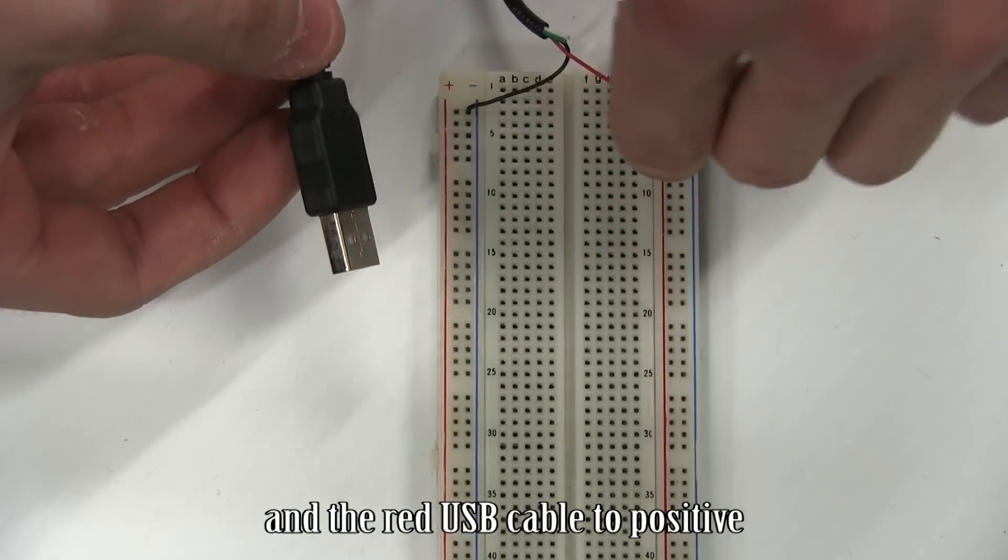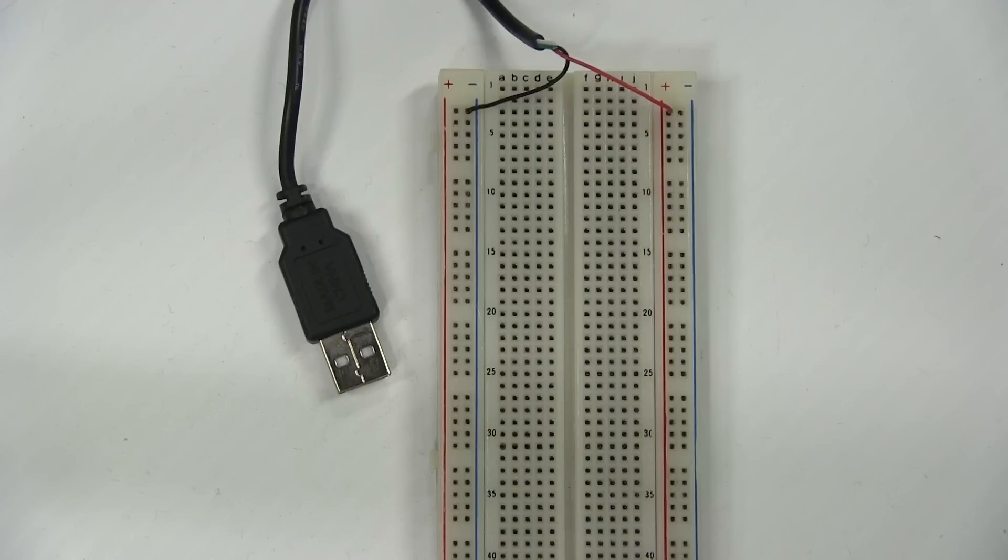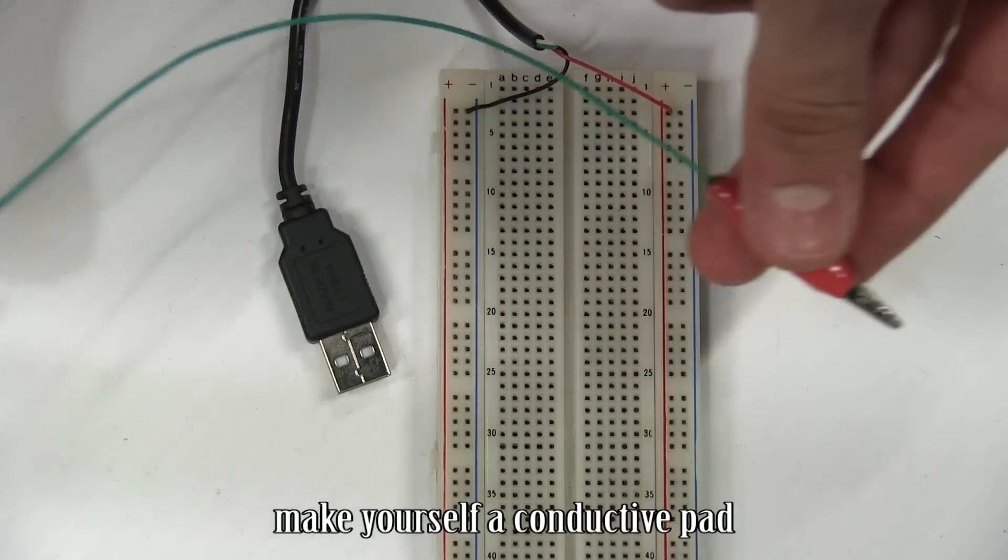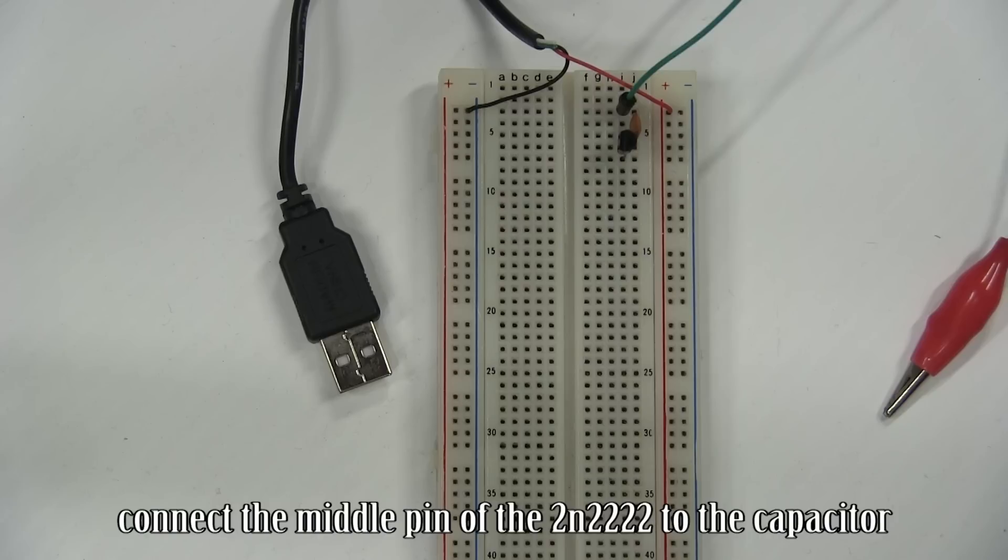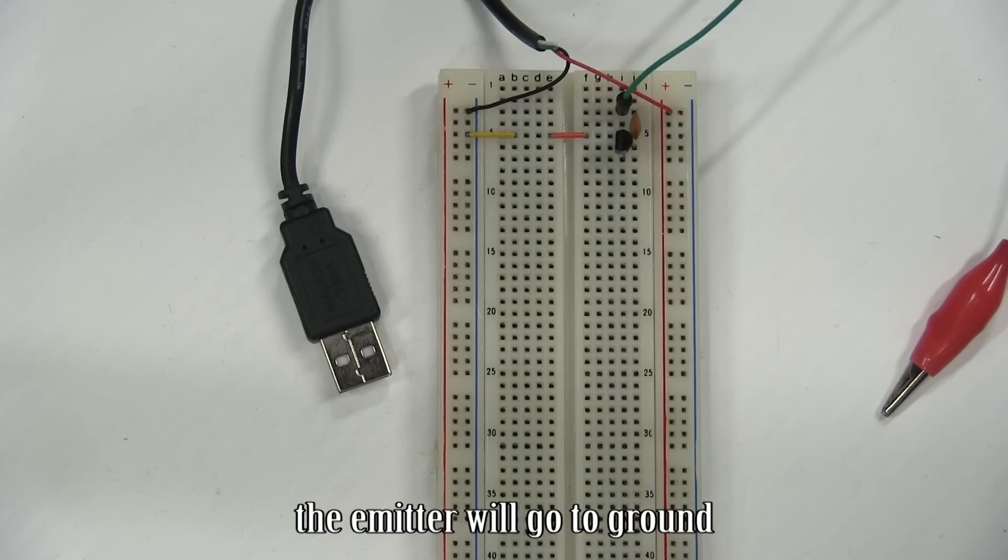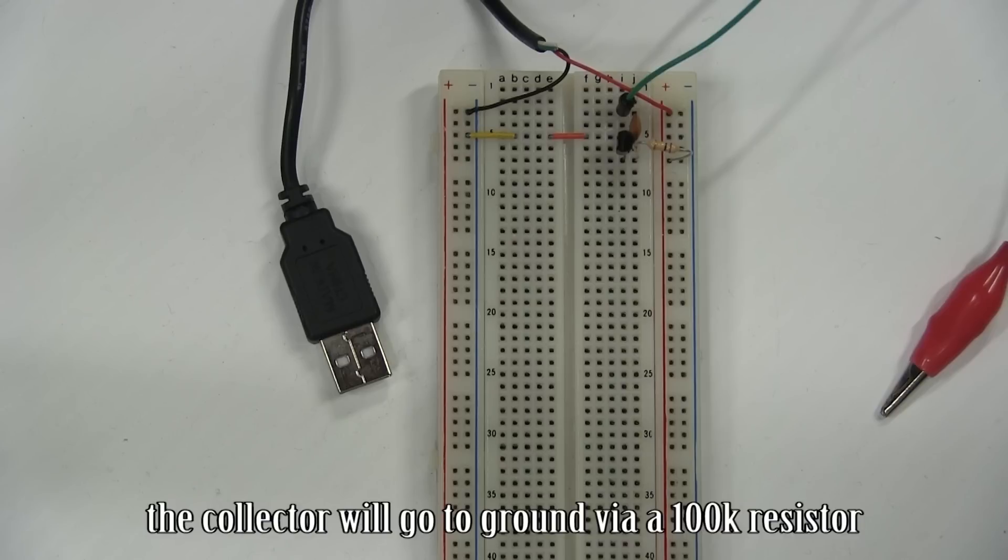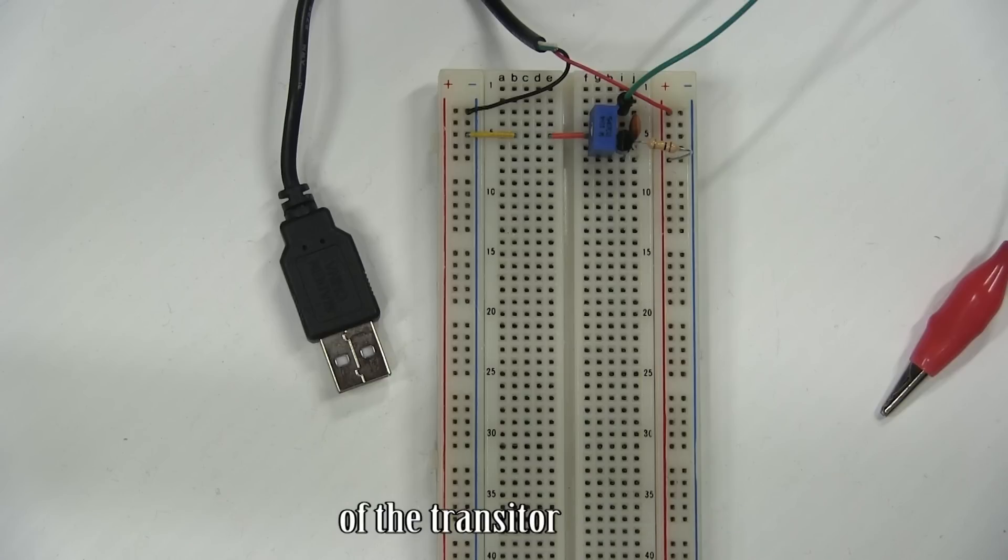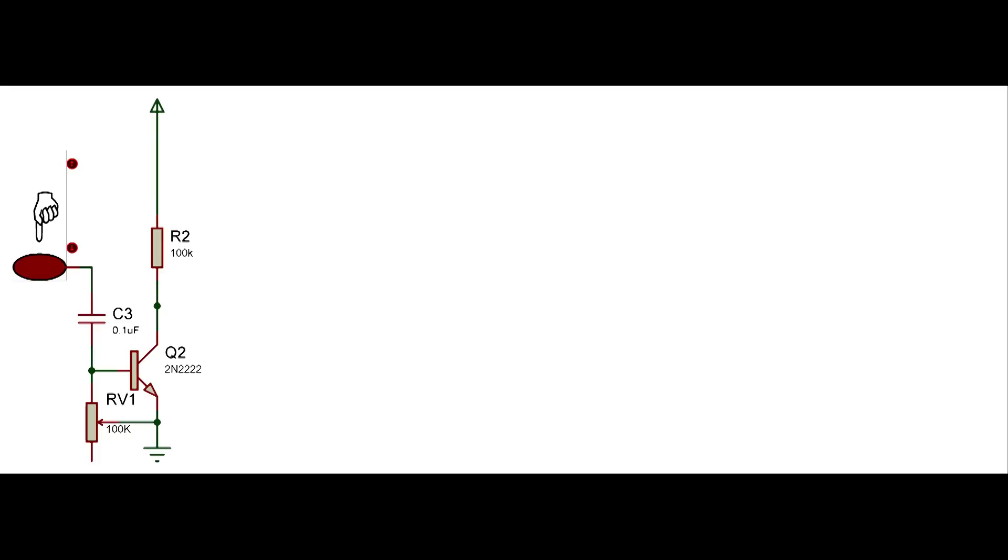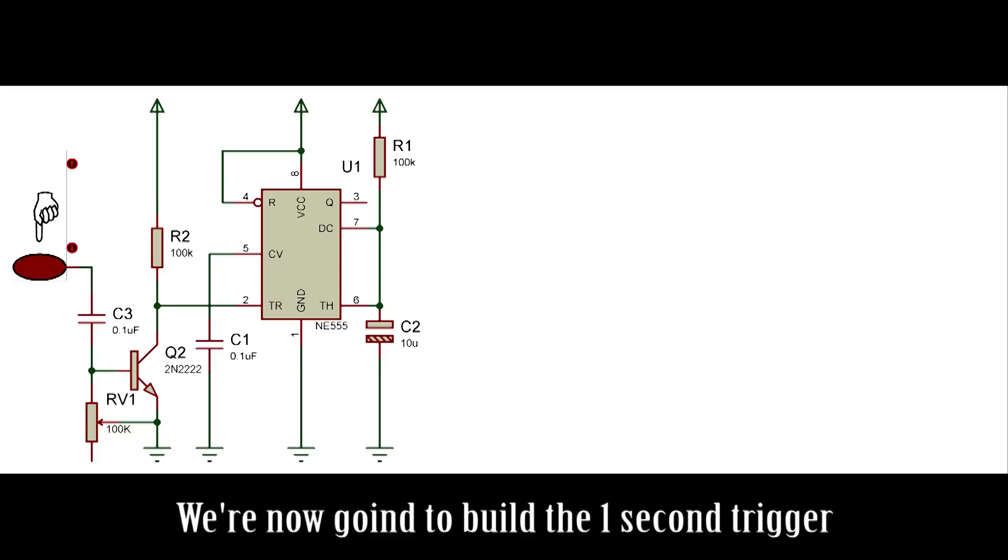the red USB cable to positive. Make yourself a conductive pad. Connect the pad to the breadboard. Add a 0.1 microfarad capacitor in series. Connect the middle pin of the 2N2222 to the capacitor. The emitter will go to ground. The collector will go to ground via a 100k resistor. A 100k pot will go between the left and middle pin of the transistor. We are now going to build the one second trigger.